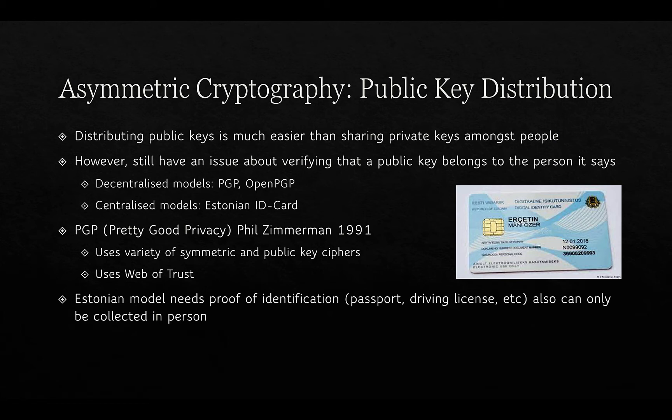In terms of public keys, there is still an issue about verifying that a public key belongs to the person it claims to. There are two different types of approaches: decentralized models like PGP and OpenPGP, and centralized models where a central authority creates and manages public keys for everybody. PGP — Pretty Good Privacy — was invented by Phil Zimmermann in 1991 and uses a web of trust to authenticate public keys.